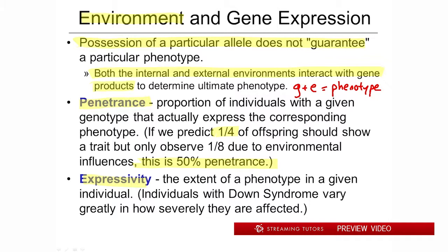Sometimes in human pedigrees, to simplify things, they'll say to assume complete penetrance — meaning if someone has the genes, they're going to be shaded and they're going to have the trait. We're not addressing penetrance there because it could make things very complicated. In that case, half of the people who have a particular genotype are not expressing it due to some environmental factor — because what else is there? It could be something we've already covered, like gender, and that may not seem like the environment to you, but hold on.